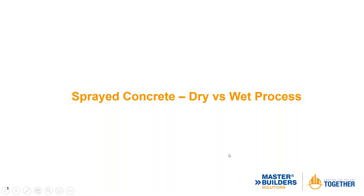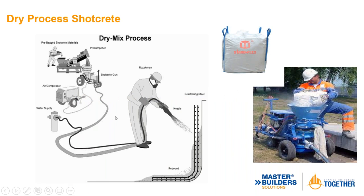For the dry process, it's recommended to use a pre-bagged material in a pre-dampener. Unfortunately it's not used as much as it should be, but it reduces dust and starts the hydration of the cement. It's put into a shotcrete gun — usually a rotary barrel — with air fed to the machine and water fed to the nozzle. Your nozzle man is your batch person, your mixing person — the person who gives you the quality. You want someone who understands water-cement ratios and concrete, because that is where your quality control is.